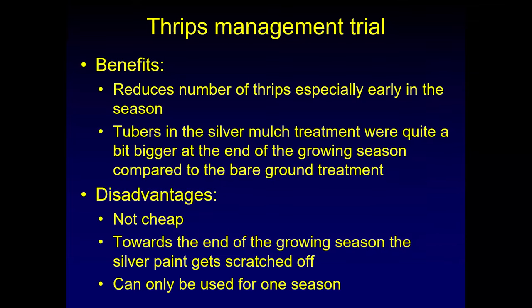The benefits: it reduces the number of thrips, especially early in the season when it's most important. The tubers under the silver mulch treatment were quite a bit bigger at the end of the growing season compared to the bare ground treatment — either because of more moisture under the mulch or slightly higher temperatures — which could be very beneficial if you're dividing tubers. Disadvantages: the silver reflective mulch is not cheap. The four-by-fifty-foot pieces we bought were about $25 each. You could try taking black plastic and spray painting it silver, which might work as well. Towards the end of the growing season the silver paint was getting scraped off by wind and dust, and you can only use it for one season.